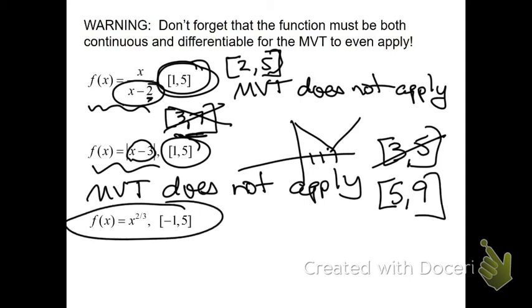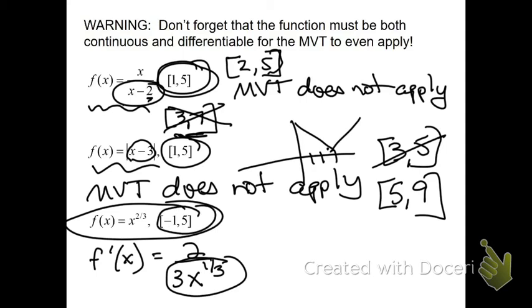This next one is a little harder to recognize, unless you know what that graph looks like. But, when you do the derivative for this one, you get 2/3 x to the -1/3. Which seems fine. But, this would not be differentiable at 0, because the denominator would be 0. Is 0 in the interval? Yes, it is. So, again, mean value theorem does not apply.